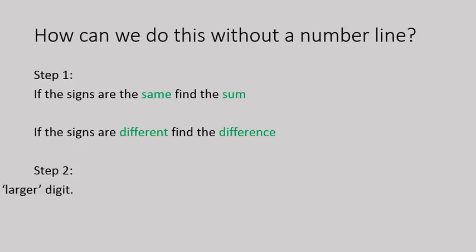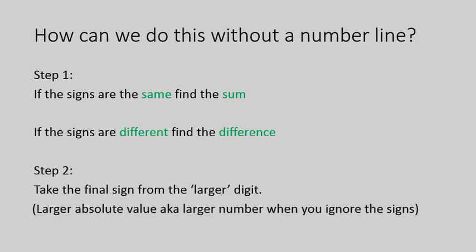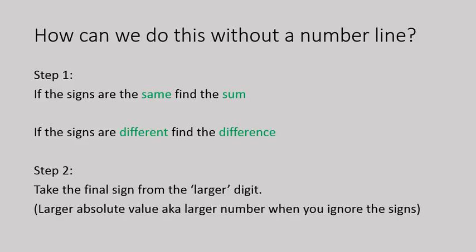And then our final answer, we have to have a sign, either a positive sign or a negative sign. And we'll take that from the larger, and I use the word digit here, the larger number. And technically, it's the larger absolute value. In other words, the larger number when you ignore the signs.